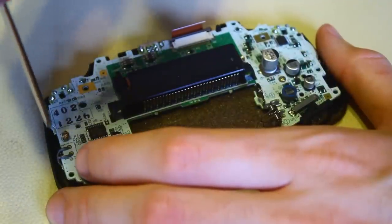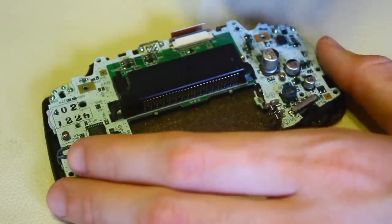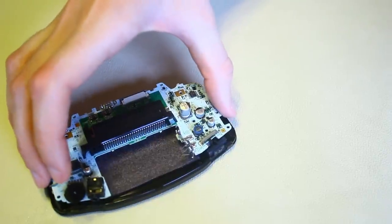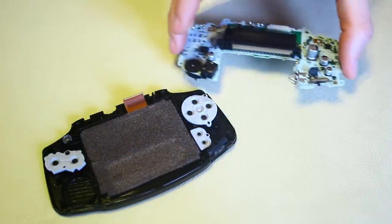Now you'll need to remove two Phillips screws that are still holding down the motherboard. Once those are out, you should be able to take the motherboard away from the rest of the case.